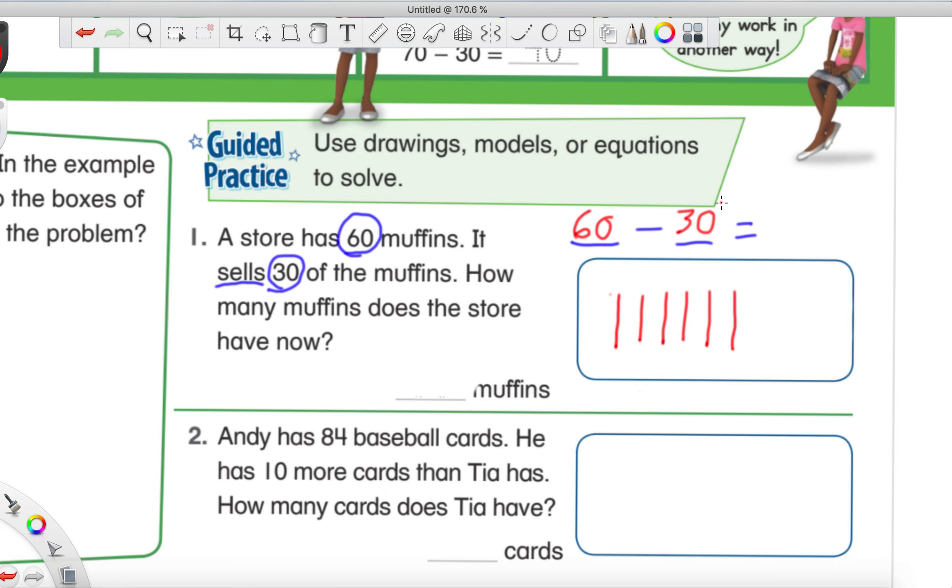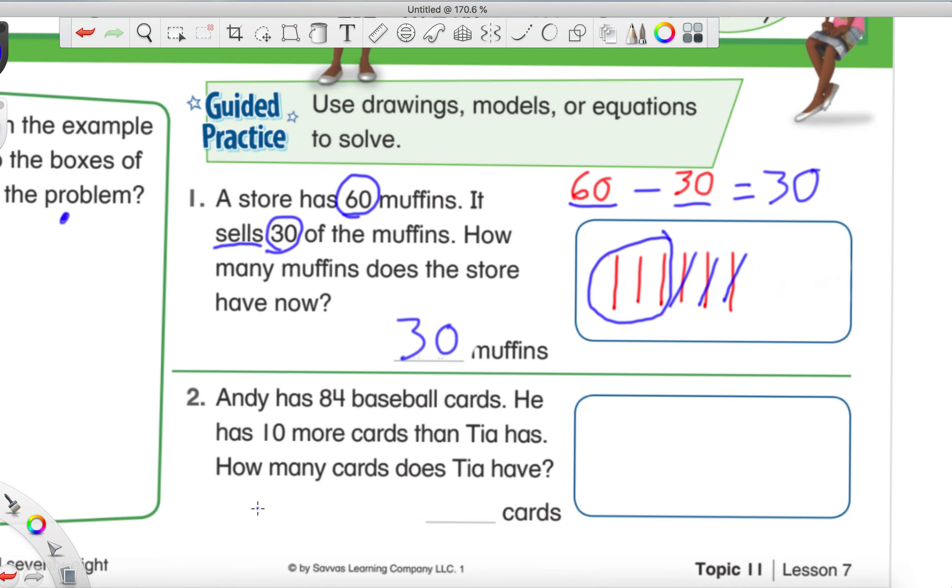Next, we need to take away 30. Well, when we take away, we're just going to cross it out. So let's count by tens all the way up to 30 as we cross them out. 10, 20, 30. And now we have these left. If we count these, we have one, two, three tens. And we know that three tens makes 30. So after we sell 30 muffins, we're going to have 30 muffins left.